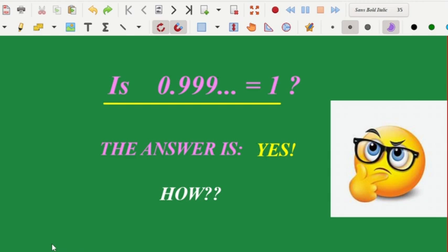Is 0.999 dot dot dot running up to infinity equal to 1? Now intuitively it appears that since it's beginning with 0, it's 0 point something so it should be less than 1, but friends the answer is that it's indeed equal to 1. It's just another way of writing 1.